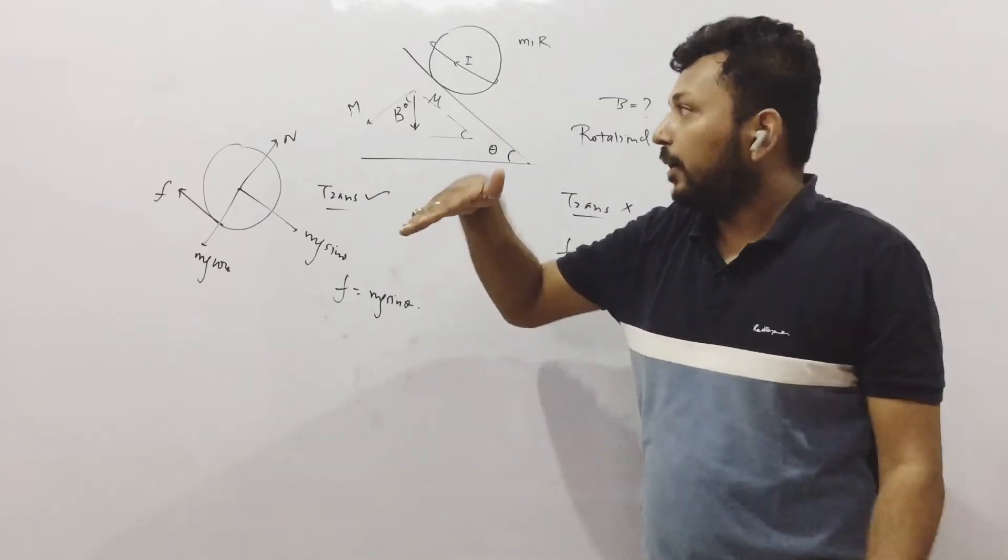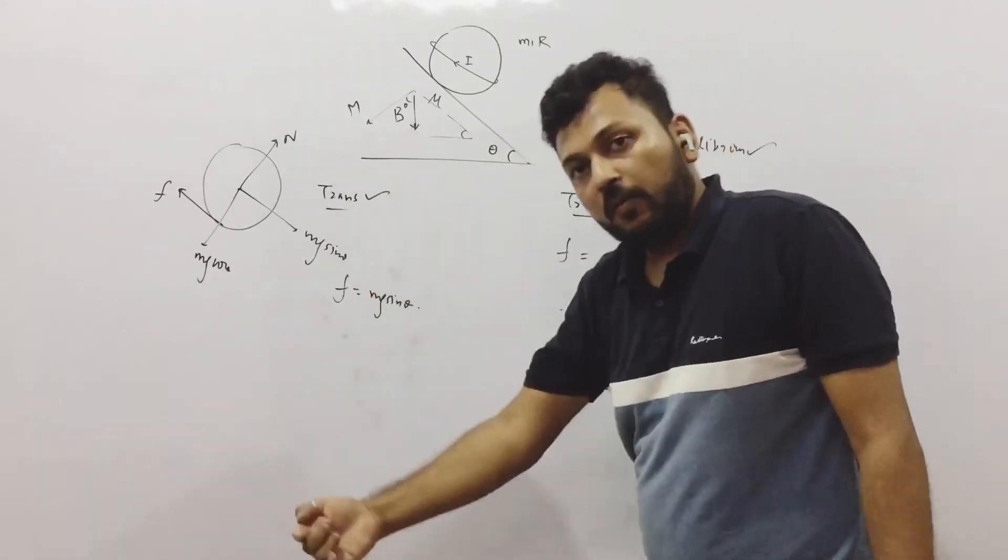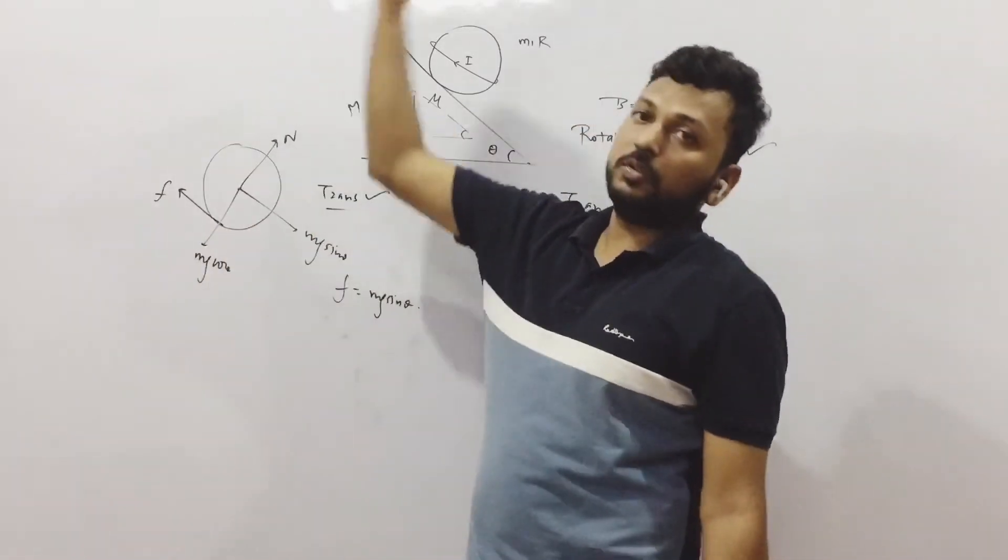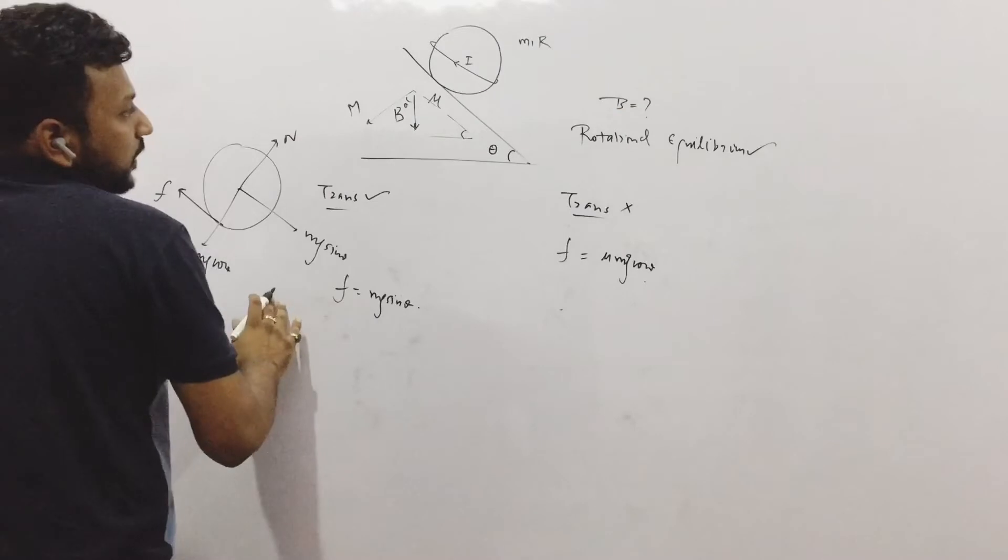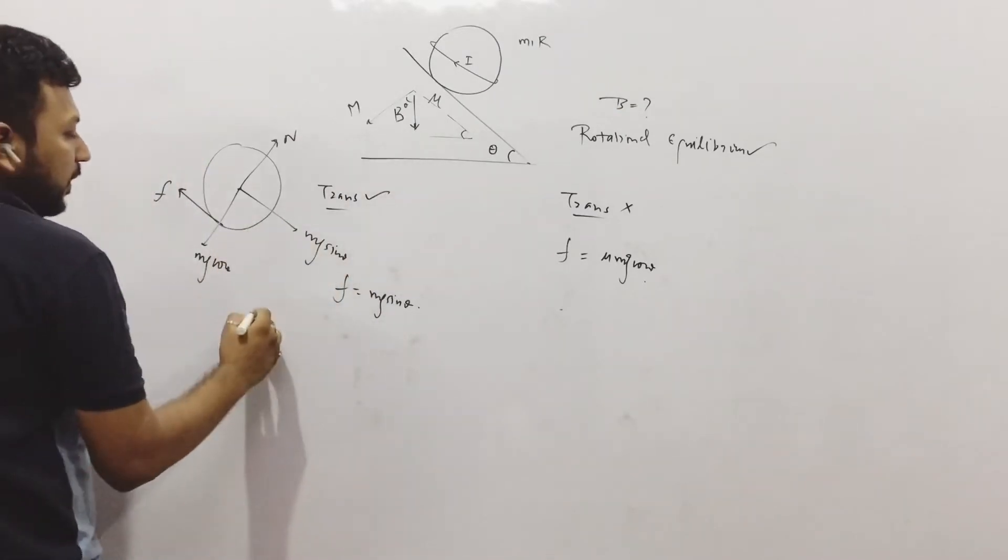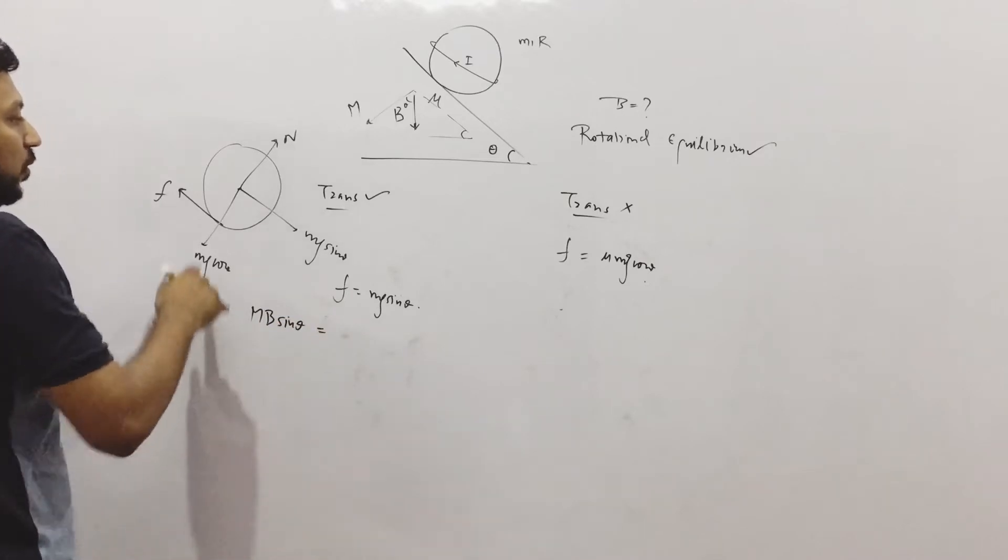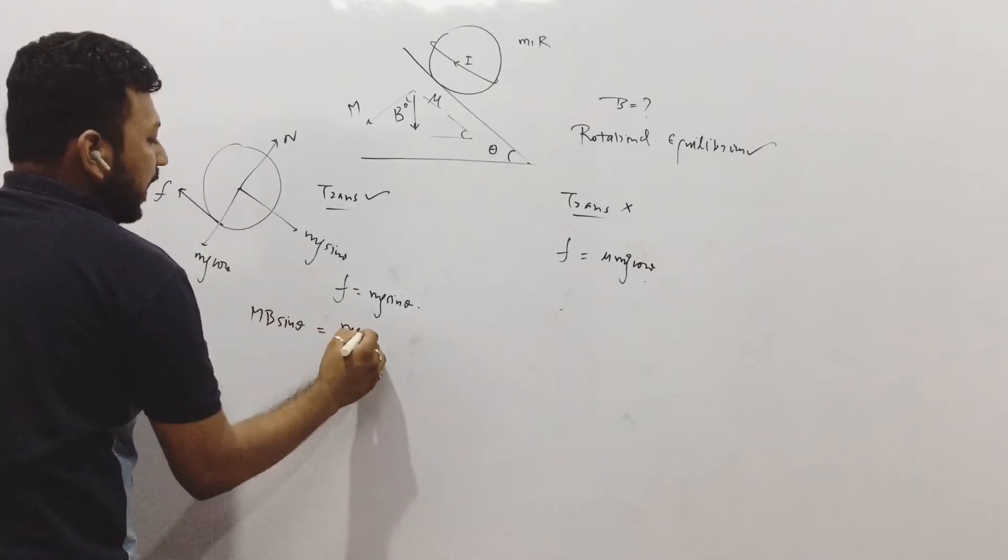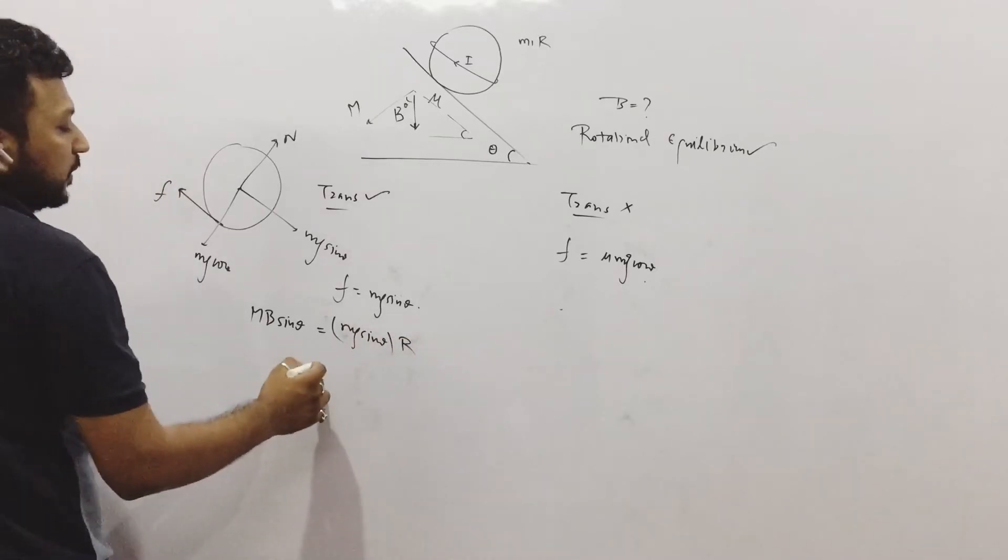That means you can see, M cross B, the M cross B torque, anti-clockwise is equal to the clockwise torque of force, that is F into R. So from this scenario, we can write, M B sin theta, the torque of magnetic field is equal to torque of force, that is Mg sin theta into R, force into perpendicular distance.